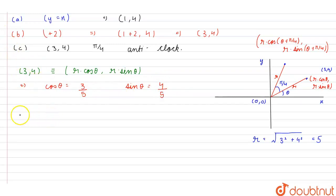Now we need to find the coordinates r into cos(θ + π/4), r into sin(θ + π/4). Here, the x-coordinate is equal to r, which is equal to 5, into, using the formula for cos(A + B) we get cos θ into cos π/4 minus sin θ into sin π/4.